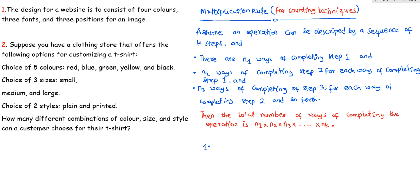For the color, we have four different colors to choose from. The next step is to choose the size, and for the size we have two sizes. The third step is to choose the neck type, and we have two different neck types. So our operation is to manufacture a t-shirt, and there are three steps you must follow.